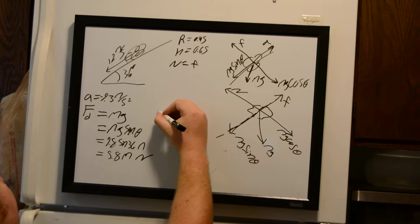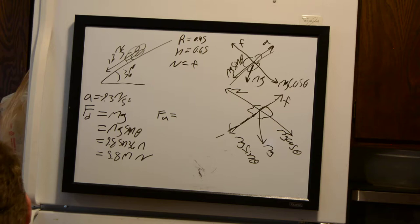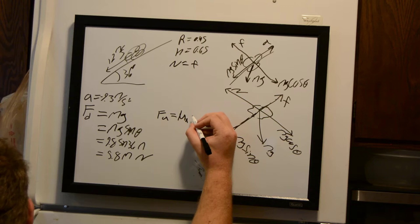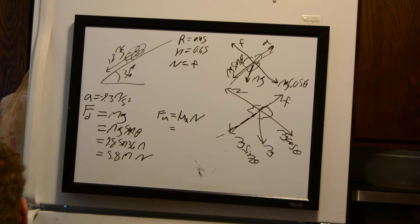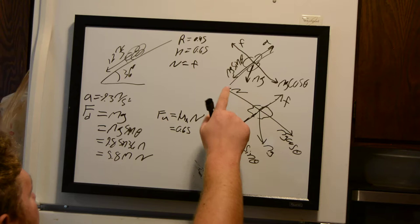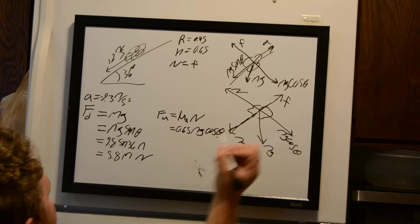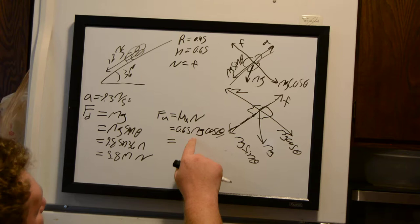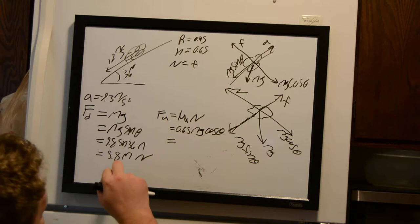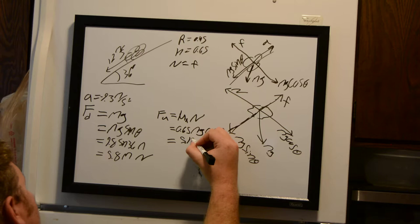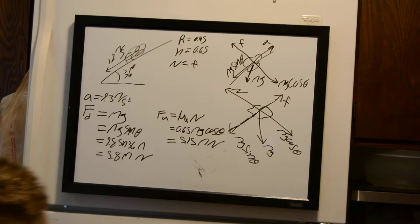Now we want to find what the forces are pulling our rocks upward. The force pulling the rocks back is the force of friction, so that's the kinematic friction equation: the coefficient 0.65 times the normal force, which from Newton's third law equals mass times gravity times cosine of theta. We know gravity and theta but not mass, so that gives us 5.15 times mass, newtons.